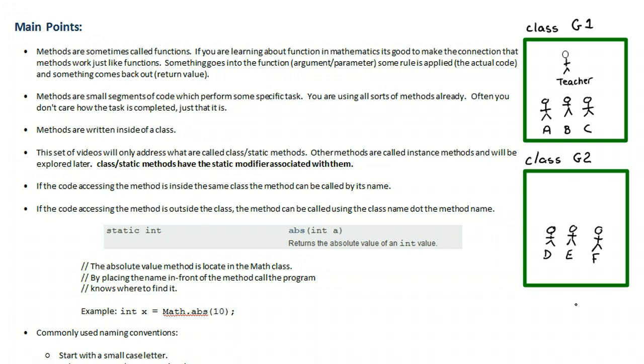And a perfect example is accessing the math methods. So here's a little segment from the math class online documentation and this is a method called the absolute value method. The parameter is an integer so we need to give it an integer and it returns an integer. So if I want to actually invoke this method or call it, invoke and call mean the same thing, I would say Math which is the name of the class, dot abs which is the name of the method, and I would pass it the value 10 and then it would return the value and put it into x.